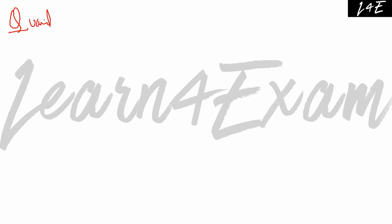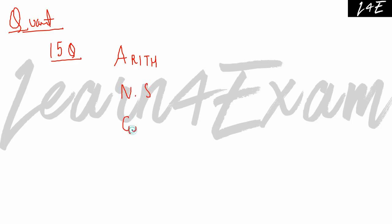Let's start with the Quant section — Quantitative Aptitude. How many questions do you have to do? At least 15 questions. 15 questions are very easy. The first chapter is Arithmetic, then Number System, and the third is Geometry and Mensuration.